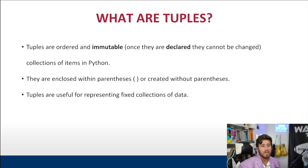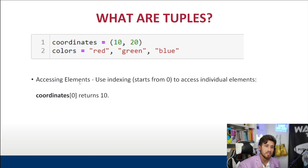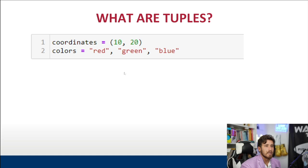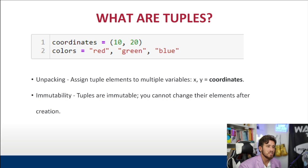Tuples are useful for representing data that's fixed in length. If you have three specific things you only want to reference and they'll never change, you can represent them in a tuple rather than a list so nobody can change those elements. For example, 'coordinates' is a tuple and 'colors' is a tuple — Python will interpret a comma-separated list without parentheses as a tuple. Accessing elements works the same way: coordinates[0] returns 10. You can also unpack tuple elements into multiple variables: x, y = coordinates assigns each element to a variable. Tuples are immutable, so their elements cannot be changed once created.